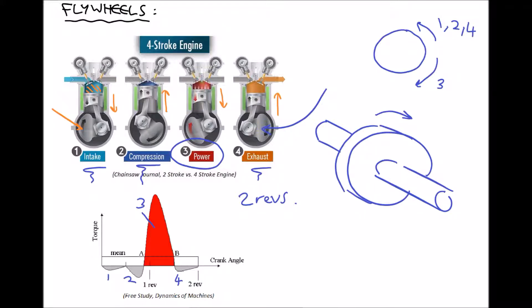Because a rotating mass has inertia, it takes energy to get that mass moving, and it also takes energy to slow it down. We can use that to our advantage: absorbing energy during the power stroke and re-dissipating that energy during the exhaust, intake, and compression strokes. Let's now look at how we would go about sizing a flywheel for a given application.